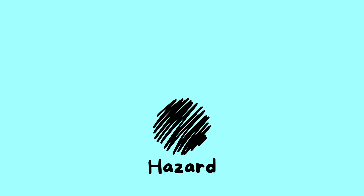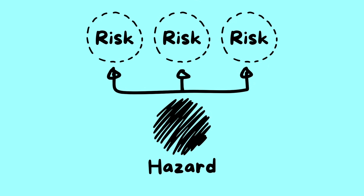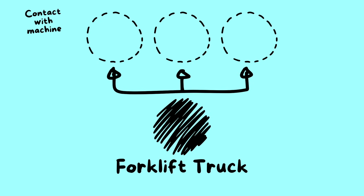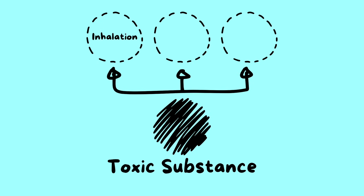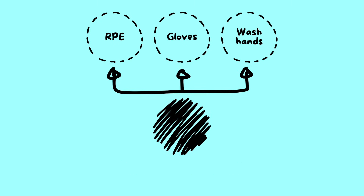A hazard is something with the potential to cause death, injuries, and harm to health. A risk is the chance that somebody could be harmed by the hazard — it calculates how likely it is that someone will be hurt and how severely. A hazard can create multiple risks. Risks can be reduced and controlled to prevent the hazard from causing harm, and sometimes hazards can be eliminated to remove the risks entirely.